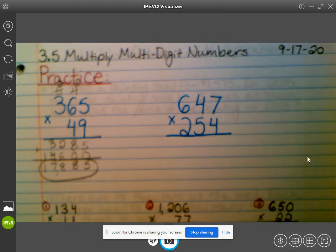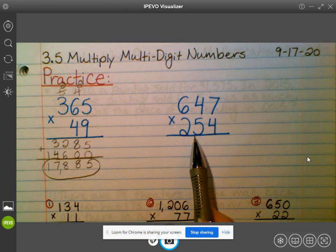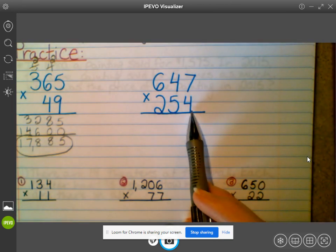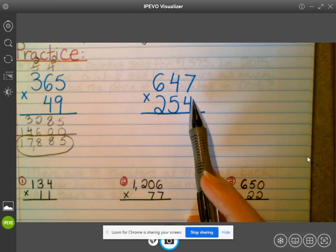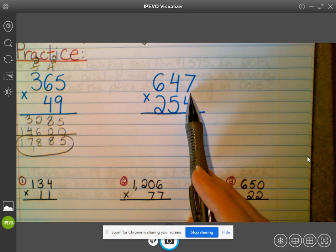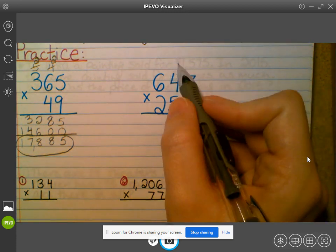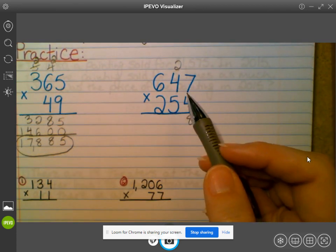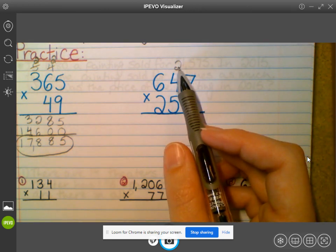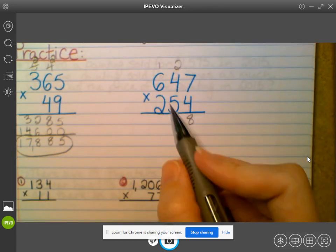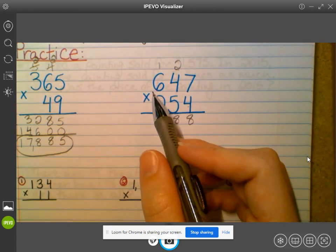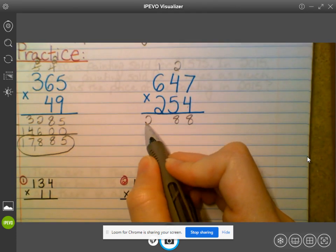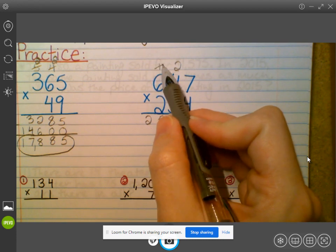And then we're going to do this one together and then you guys will be able to do the next three on your own. So again, we are starting down here at this four. Four times seven, what is that? 28. So we carry our two, bring down our eight. Four times four is 16. 16 plus two is 18. Carry our one, bring down our eight. Four times six is 24. 24 plus one is 25. Cross out the two numbers that I just carried.